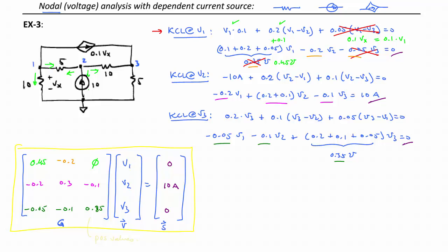The 0.1 Vx current source only connects to nodes 1 and 3, and so this whole expression here is unchanged. All right, so these are all good here. We don't have to change any of that.